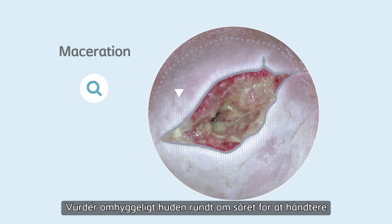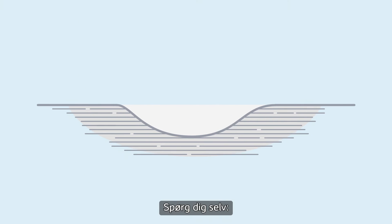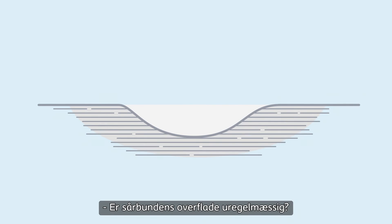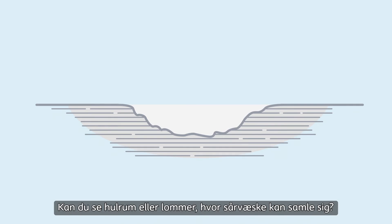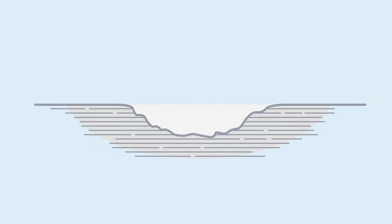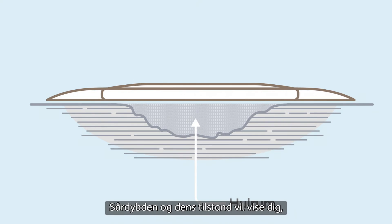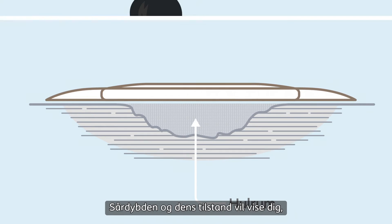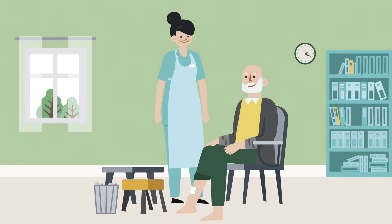Carefully assess peri-wound skin to timely manage maceration or any peri-wound skin damage. Ask yourself: is the wound bed surface irregular? Do you see cavities or pockets where exudate can pool? Did the previous dressing manage to conform to the wound bed and manage the gap? The wound depth and its condition will guide you if a conforming dressing is required to reduce the risk of exudate pooling.